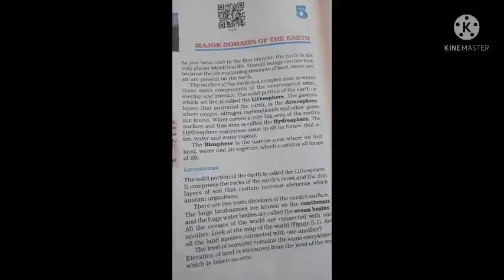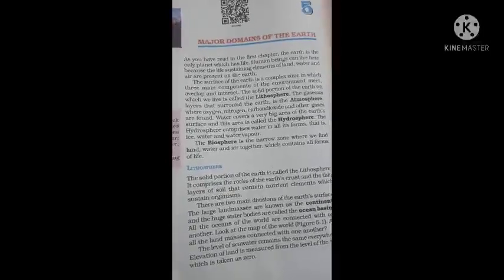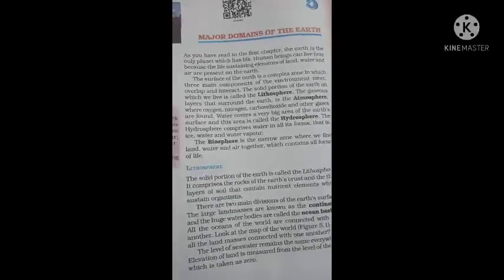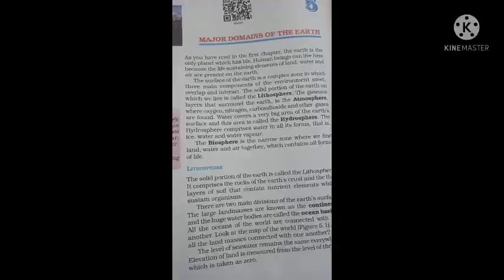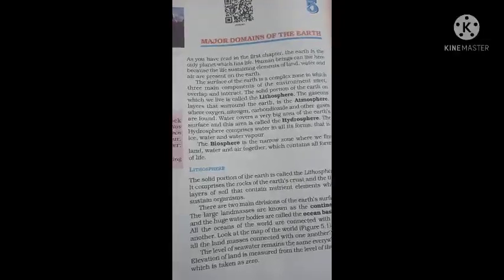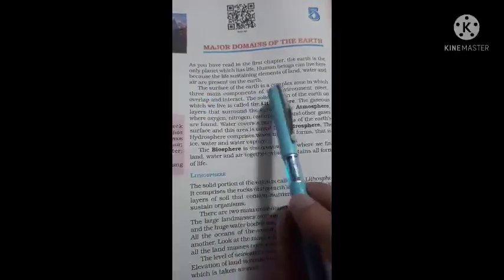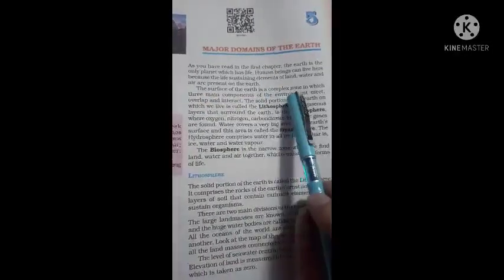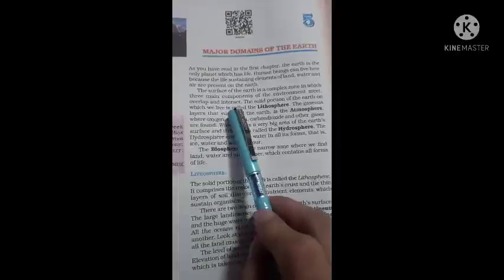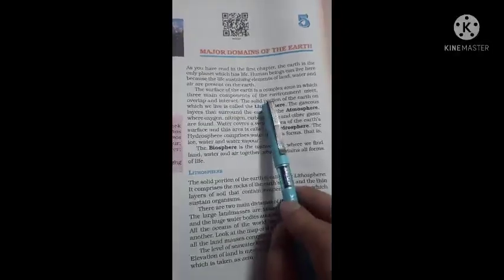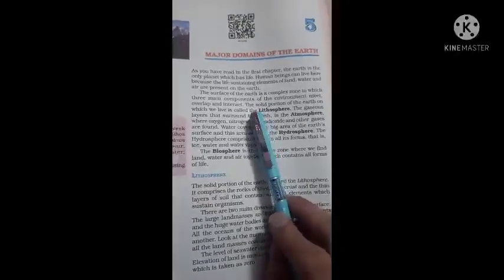The earth is a planet on which life is possible because of certain elements. The surface of the earth is a complex zone in which three main components of the environment meet, overlap, and interact. The earth's surface is made from three components.